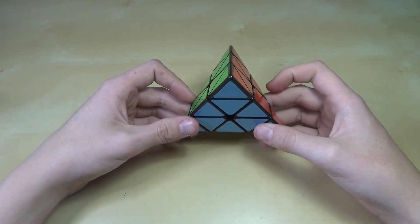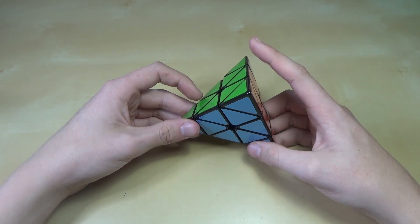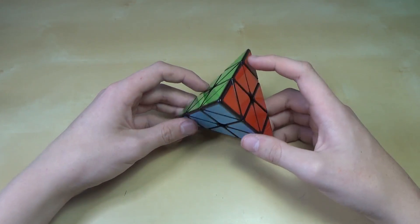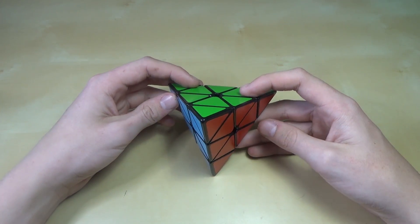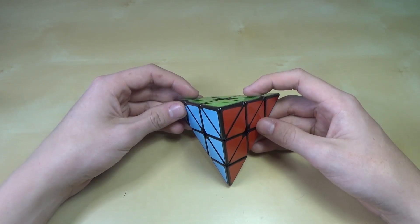So today I'm going to show you the Oka method on the Pyraminx. This is a more advanced version of Keyhole, kind of one flip-ish, but not quite as complex as one flip and doesn't have as many algorithms. But it can be very fast.